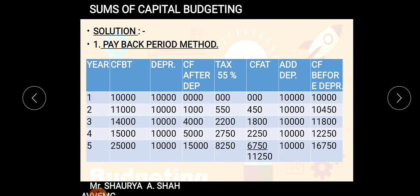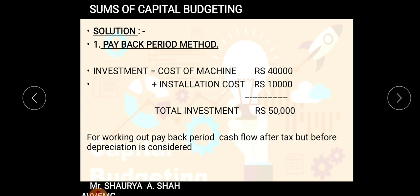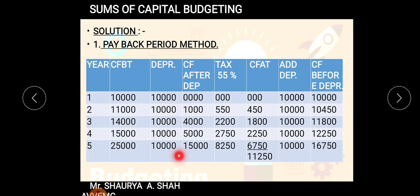We calculated an eight-column table. The first column is the years — the five-year economic life. The second column shows the cash flow before tax as given in the question. From that, we deducted depreciation: fifty thousand total investment divided by five years, using the straight line method. The resulting column is cash flow after depreciation. In year one, cash flow and depreciation are the same, so the answer is zero. From that, we deducted the corporate tax rate of 55 percent.